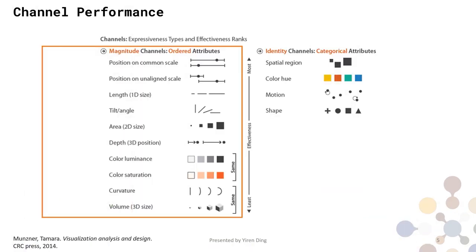This is the canonical ranking of effectiveness of common data encoding channels. As we can see, motion does not even belong to the magnitude channels, which means we usually do not use motion to encode numerical data values. But particle wind flow map does use motion to encode wind speed data, which makes it unique.